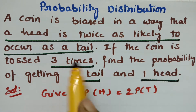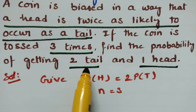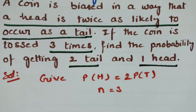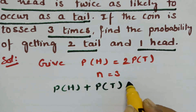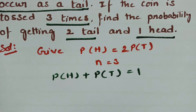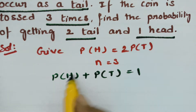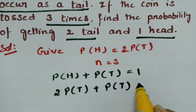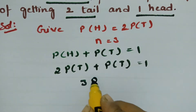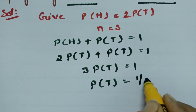We have n equal to three, and we need to find the probability of getting two tails and one head. Using the total probability rule: P(H) + P(T) = 1, and since P(H) = 2·P(T), we get 2·P(T) + P(T) = 1, so 3·P(T) = 1, therefore P(T) = 1/3.